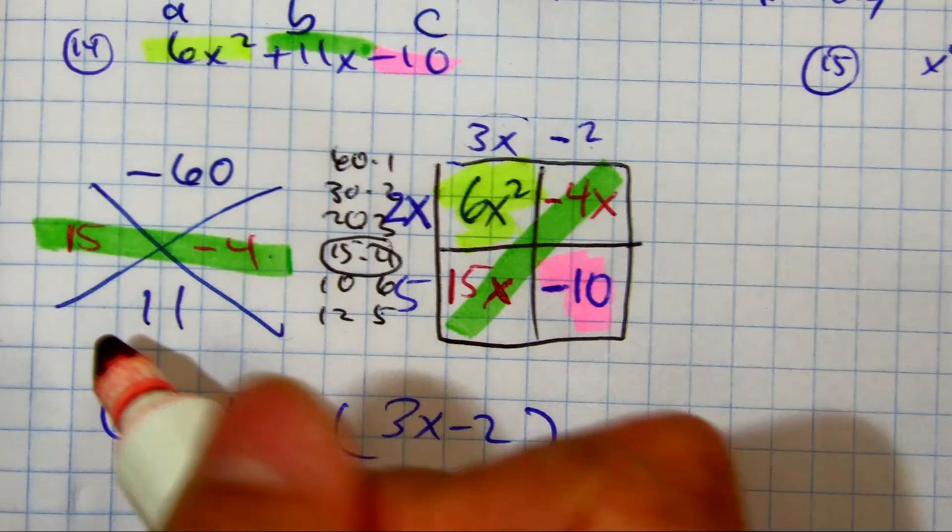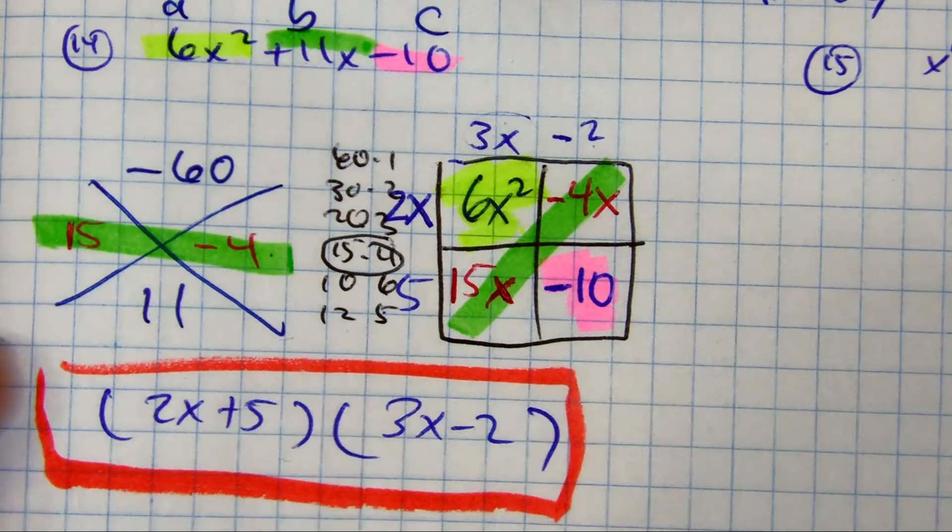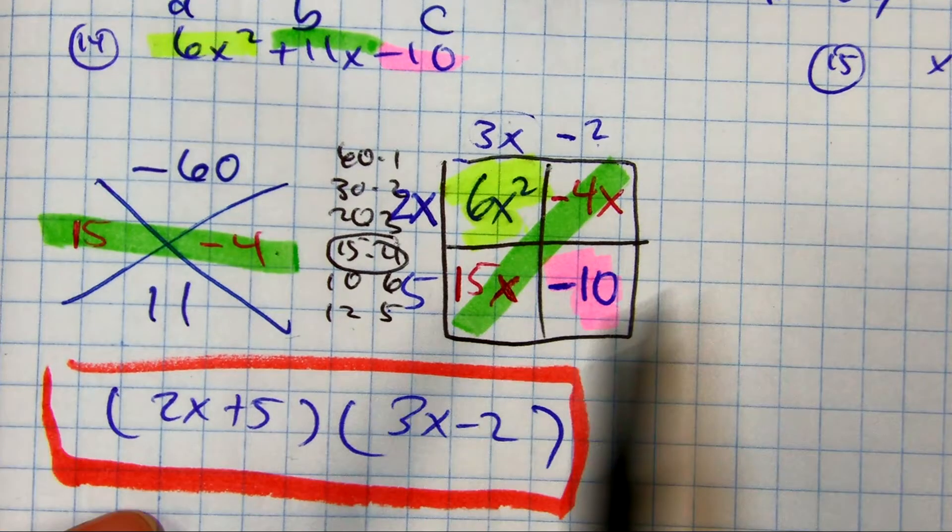Yeah. Distribute or multiply or FOIL. Does that make sense? You undo what you just did.